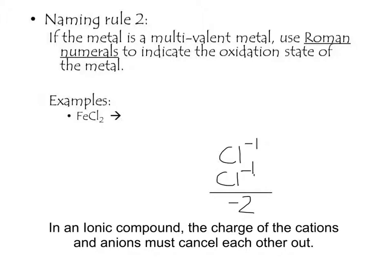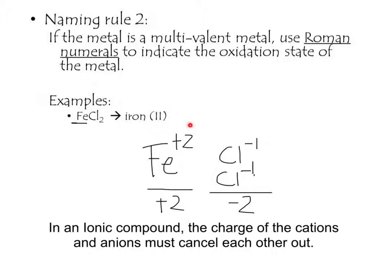In an ionic compound, charges must cancel to zero. Since the anions total minus 2, the cation must be plus 2. There is one iron, so iron must carry that plus 2 charge. When we write the name, it is iron(II) — because of the plus 2 charge — and chloride, because we change chlorine to the -ide ending. So the final name is iron(II) chloride.